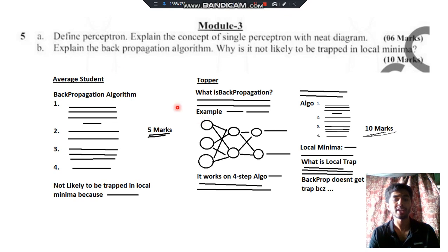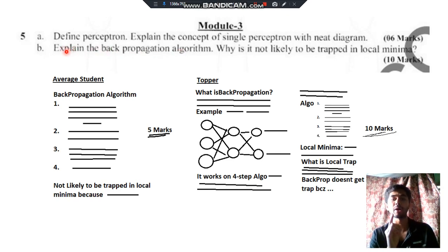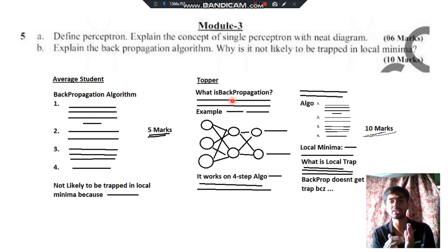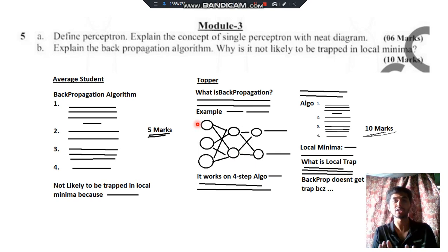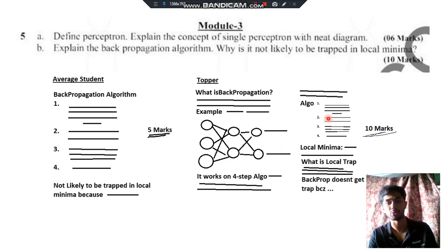Whenever you find a question like 'explain backpropagation algorithm,' don't directly go into the algorithm. They said 'explain,' not just 'write' — so first write what backpropagation is, then come to the algorithm. Write examples of what backpropagation consists of. Then write that it is based on artificial neural networks: input nodes, hidden layer, output nodes. Inputs are supplied, weights are altered, and if the output is not correct it comes back — that is the working behind backpropagation. Then write the four-step process.